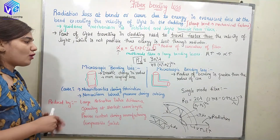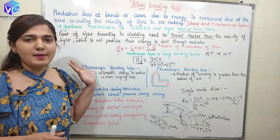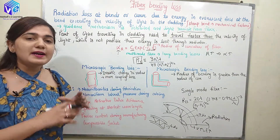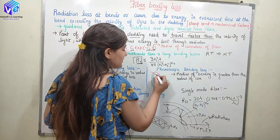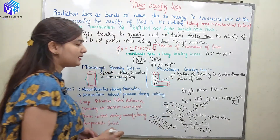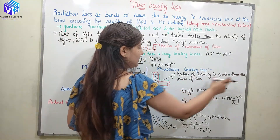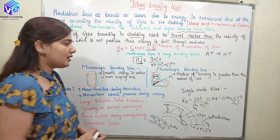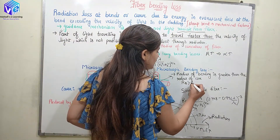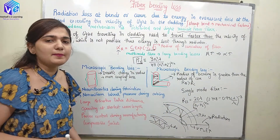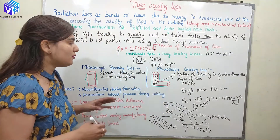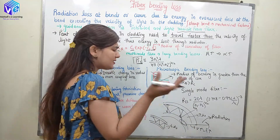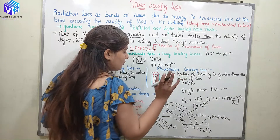Now coming to the two types of bending losses: macroscopic bending losses and microscopic bending losses. As the name suggests, macro means on a larger scale and micro means on a smaller scale. In macroscopic bending losses, we are bending on a larger scale — there is a bigger bend. When the light is traveling through such a bend, it comes out at the bend. The condition here is that the radius of bending R_b is greater than the radius of the core. Whenever this condition is reached, we have macroscopic bending losses. Light travels into the cladding, has to go with a higher velocity, gains higher energy, and exits the fiber.